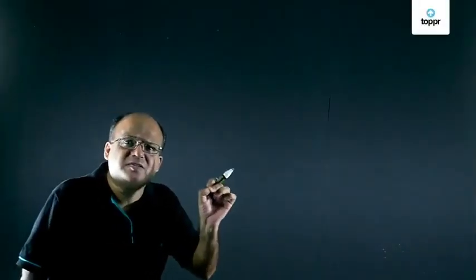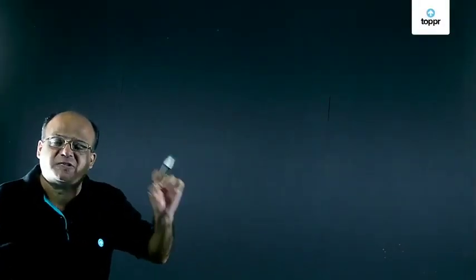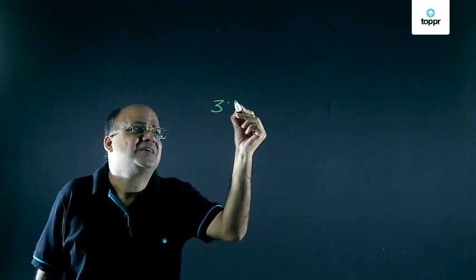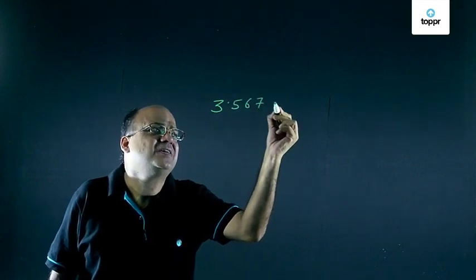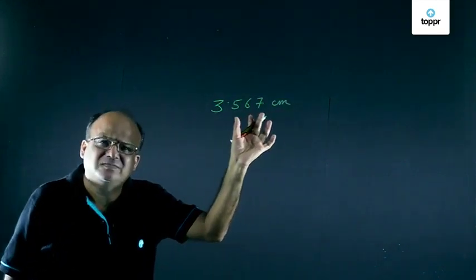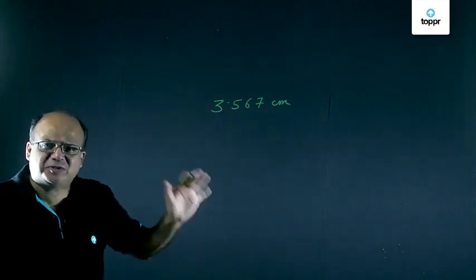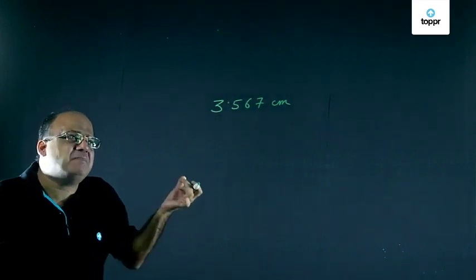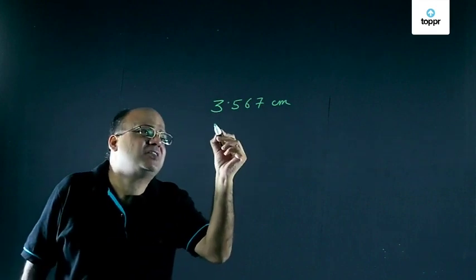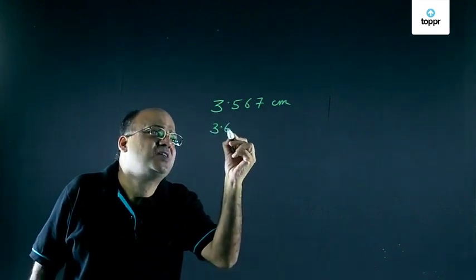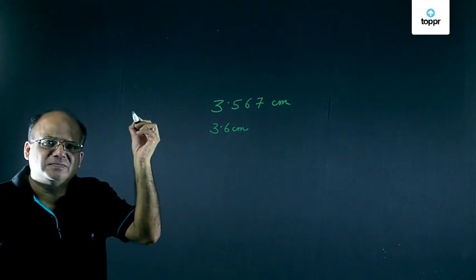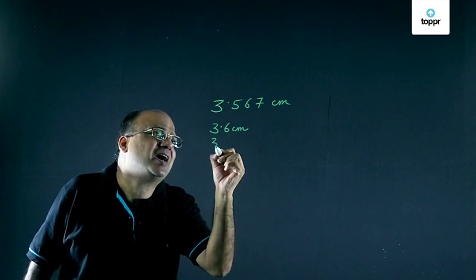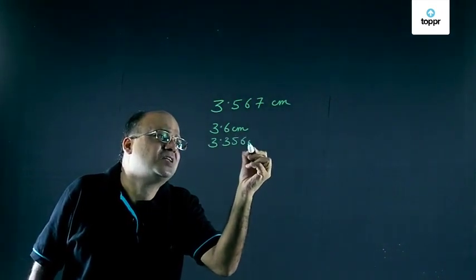Now let's try to understand the difference between accuracy and precision. Suppose the length of some object is 3.567 centimeters. This is the exact length of that object. Now if we use an instrument and measure this length and we get the reading as 3.6 centimeters, and we now use another instrument and get the reading as 3.356 centimeters.